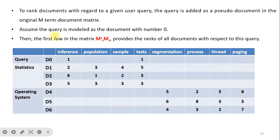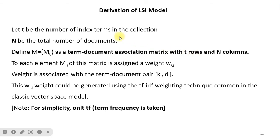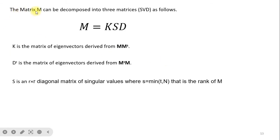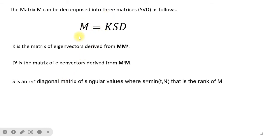The matrix M, which has T rows (keywords) and N columns (documents), can be decomposed into three matrices K, S, and D via SVD. K is a matrix of eigenvectors derived from M·Mᵀ. Dᵀ is a matrix of eigenvectors derived from Mᵀ·M. S is an R×R diagonal matrix of singular values, where R = min(T, N) — that is, the rank of M. So SVD divides M into three parts: S (concept × concept), K (terms × concepts), and D (documents × concepts).